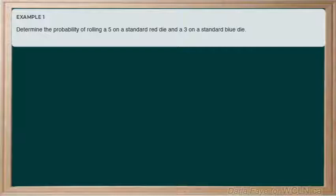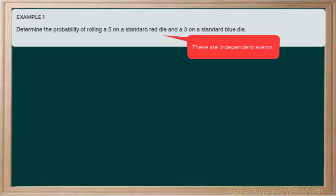The first example says: determine the probability of rolling a 5 on a standard red die and a 3 on a standard blue die. In this scenario, we have two events. The first event is rolling a 5 on the red die, and the second event is rolling a 3 on the blue die. Rolling a specific number on the red die has absolutely no impact on the value rolled on the blue die, or vice versa. So we would describe these events as being independent of one another.